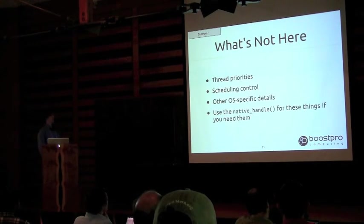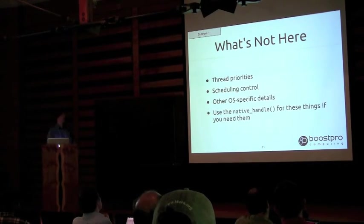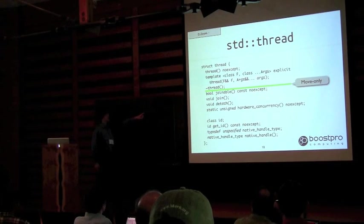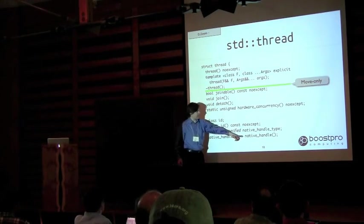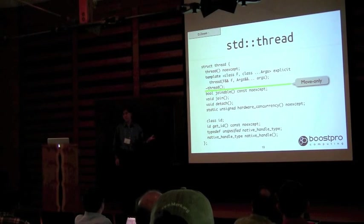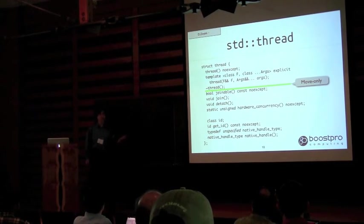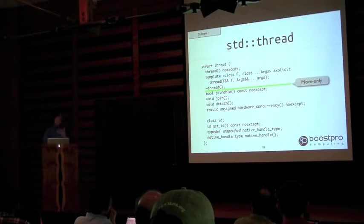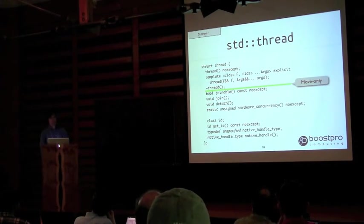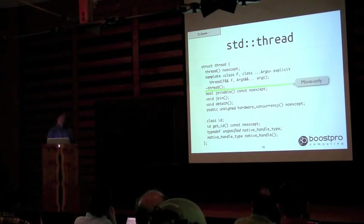What you're not seeing here, and what I'm not going to be talking about today, are thread priorities, scheduling control, or other OS-specific things. There is a native_handle method in the header declaration that you can use to get a native handle type, which is platform-specific. Your platform will define what you can do with that native handle to do custom things not covered by the standard.